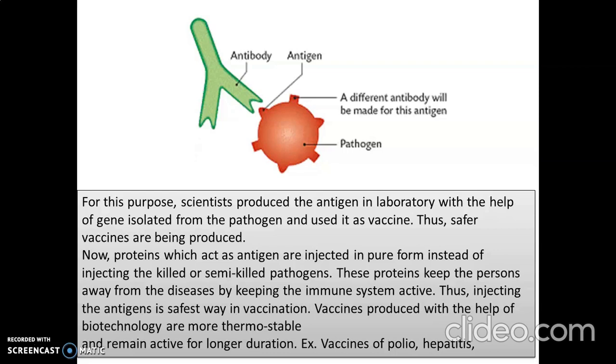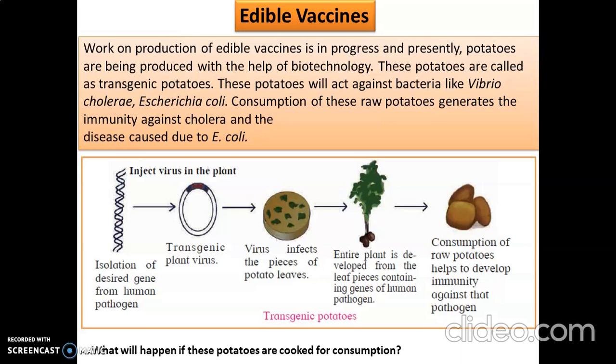Now let's go to a new concept called the edible vaccine. Edible means something that we can eat, and it can be in the form of a vaccine. Usually vaccines are in the form of injections or bitter medicine. Scientists are trying to put vaccines into some foodstuff that we can eat — and that gives rise to the concept of edible vaccines. The scientists isolate the desired gene from a human pathogen and inject it into a plant.